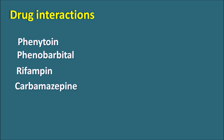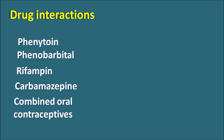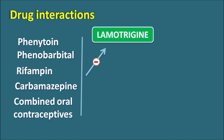Regarding drug interactions: drugs like phenytoin, phenobarbital, rifampicin, and carbamazepine — as well as estrogen-containing oral contraceptives (combined pills with estrogen and progestogen) — can decrease the levels of lamotrigine. Phenobarbital, rifampicin, and carbamazepine are enzyme inducers that induce metabolism, resulting in decreased lamotrigine levels. On the other hand, valproate can increase lamotrigine levels by twofold, so whenever valproate is combined with lamotrigine, the dose of lamotrigine should be reduced to prevent toxicity.